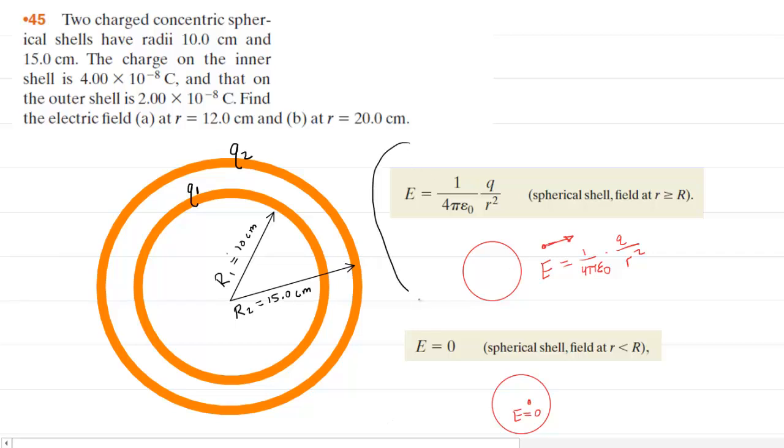For example, if we look at this set of information over here, if you're calculating an electric field due to a spherical shell at a location that lies outside of the shell, then you would simply be using this equation right here to determine the magnitude of that field.